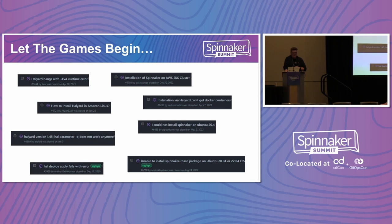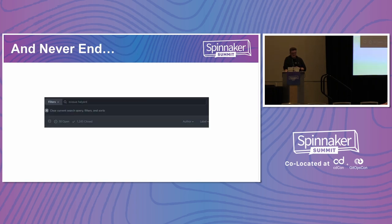I cherry-picked a couple of GitHub issues searching for Halyard: Halyard errors, how to install using Halyard, I could not install using Halyard, Ubuntu, PowerDeployApply failed, and so on. If you search Halyard in GitHub issues you'll get over a thousand results, which shows it's quite a big problem for people. Spinnaker itself isn't the easiest thing to operate, so having such a difficult barrier to entry means that a lot of people pick it up, get stuck, and then give up.